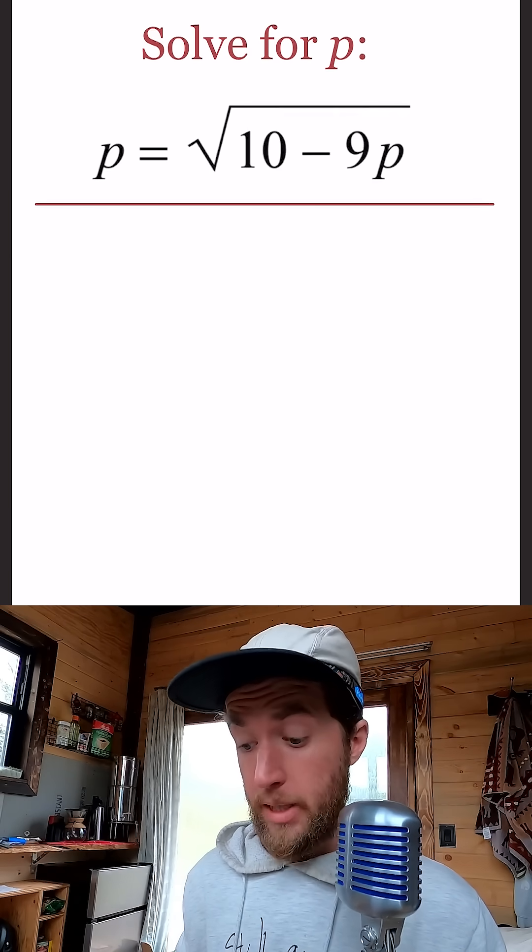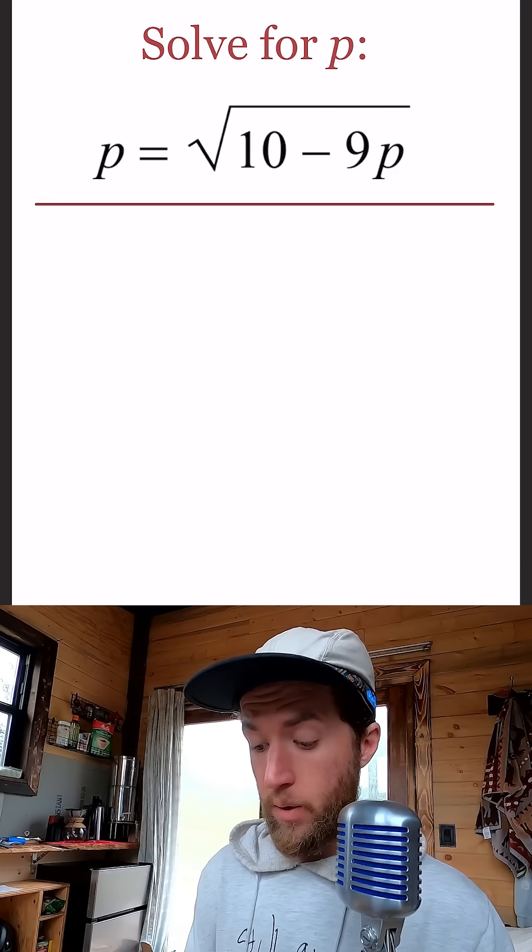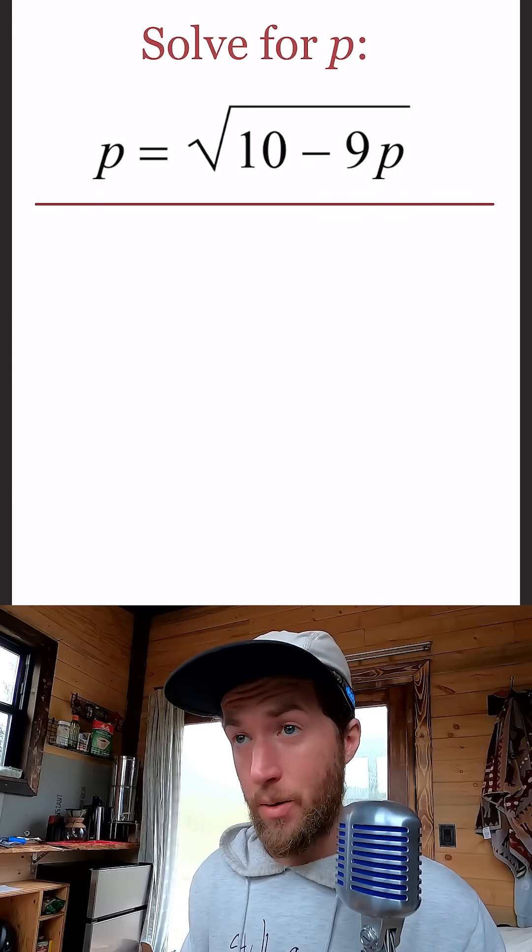All right, another double black diamond problem here. The key to me here, what I look for, is the fact that I have a P outside of the square root and a P on the inside of the square root.